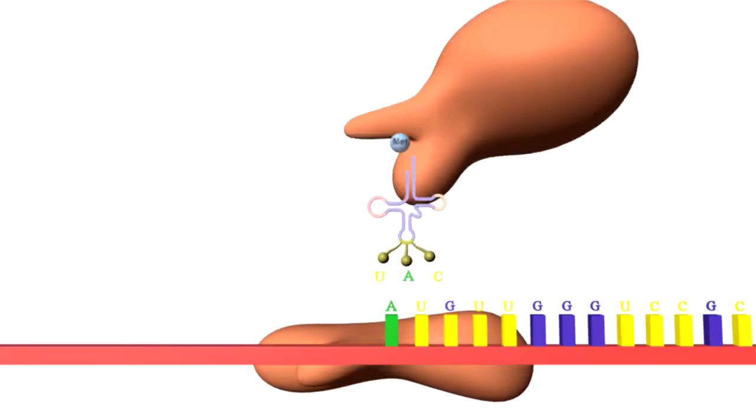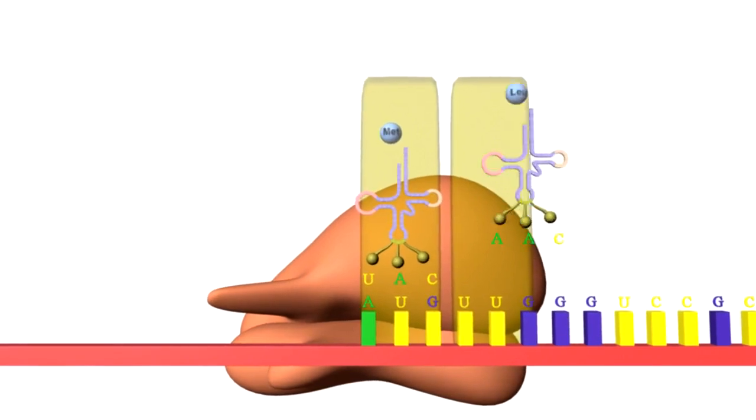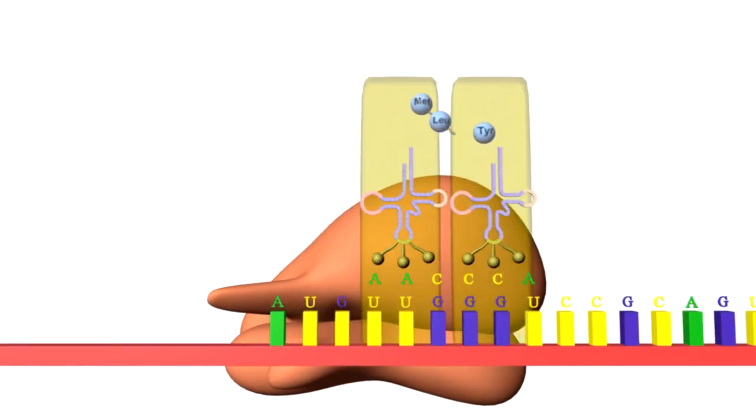Ribosomes are the protein factories of the cell. A ribosome synthesizes a protein, showing the mRNA feeding through it and amino acids being added to the growing protein chain.